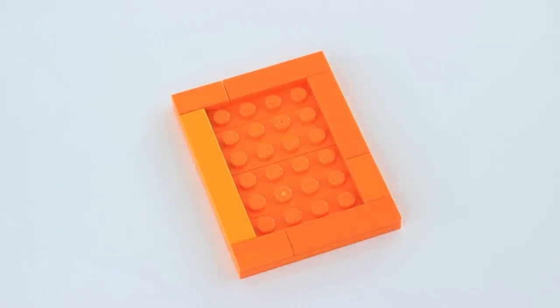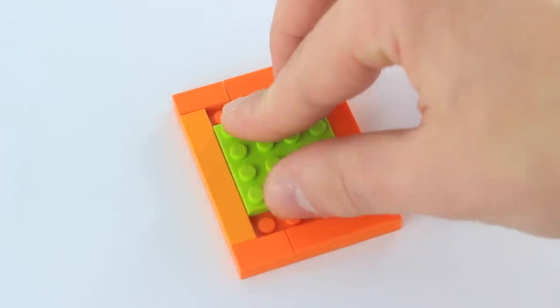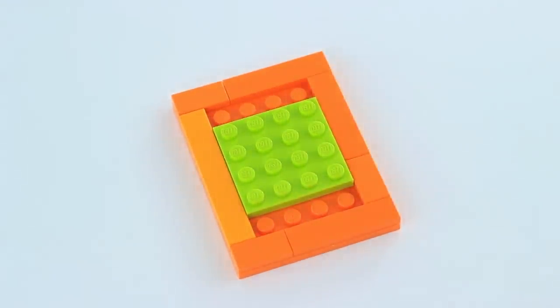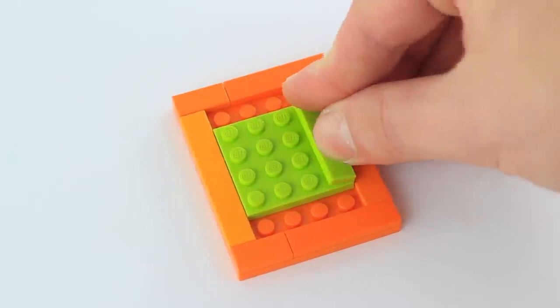Now you're going to take your 4x4 yellow-green plate, or whatever you have to make that up. You don't have to be so precise with the pieces, just as long as they can make up the same size in the end. So you put that down, then you're going to put on the smooth pieces that are yellow-green.